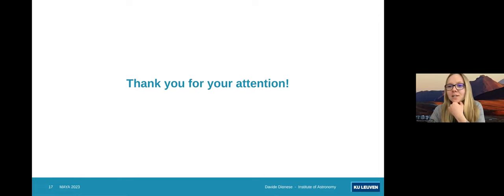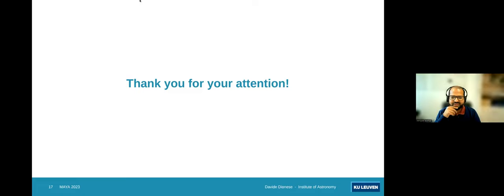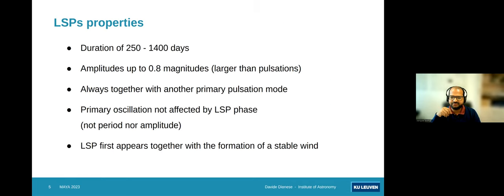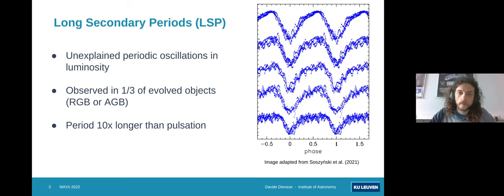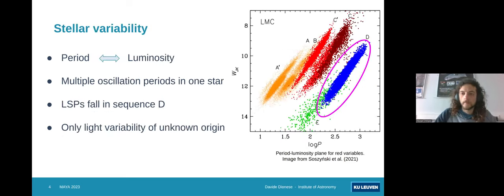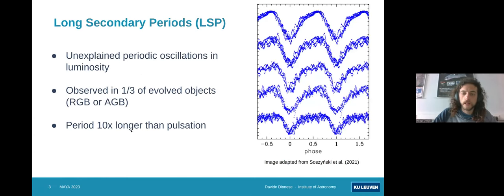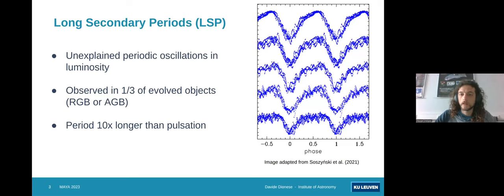Q&A — Question from Abhijit: In your first light curve, along with the long-term oscillations there are also quite a few short-term oscillations — do you know what is the origin of those? Response: Yes, indeed. The long secondary periods are the longer oscillations with higher magnitudes, and the shorter ones are due to pulsations. As I mentioned, all these stars showing long secondary periods are also oscillating with another period which is usually about 10 times shorter. This shorter oscillation is indeed due to pulsation, because all the stars we are looking at are evolved stars, usually towards the end of the asymptotic giant branch.